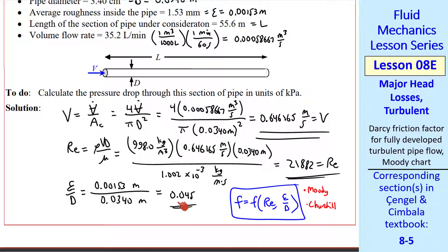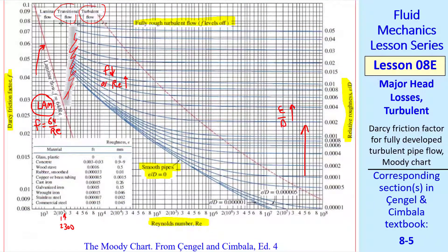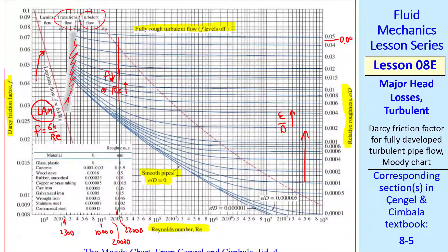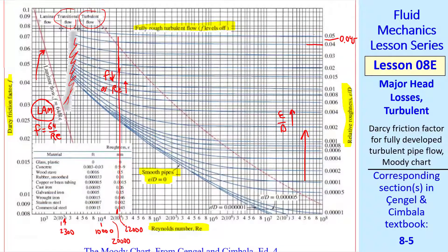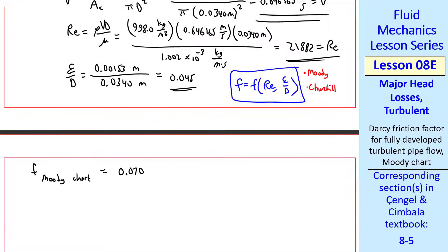We know that F is a function of Reynolds number and this relative roughness. I'll do it two ways, first with the Moody chart, then with the Churchill equation. Note the values of Reynolds number and relative roughness. From the Moody chart, we have to find Reynolds number and epsilon over d and read off F. This chart can get a little confusing. This value is 10,000, 10 to the 4th, so this is 20,000, which is this tick mark. So 22,000 is about here. I draw a line straight up from there. And now I find 0.045, which is in between the 0.04 curve and the 0.05 curve. In fact, it's halfway in between those two. So we read off about 0.070 from the Moody chart.